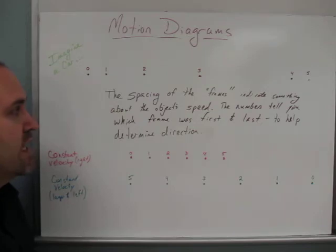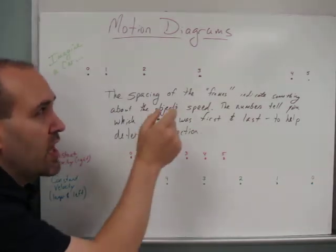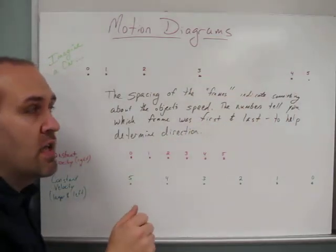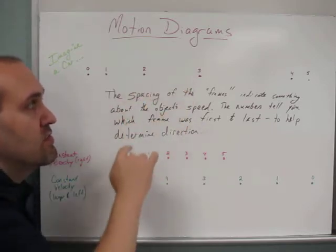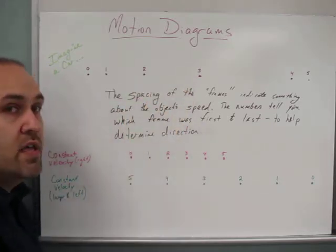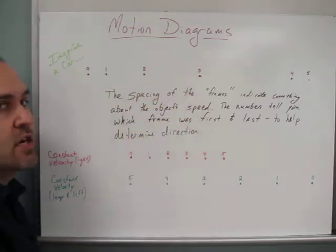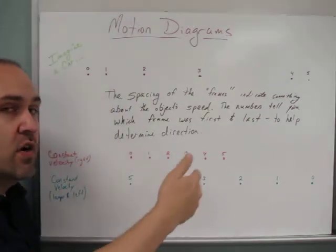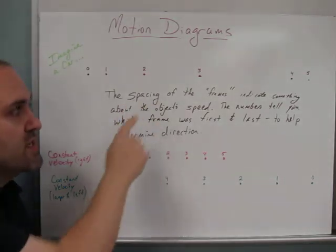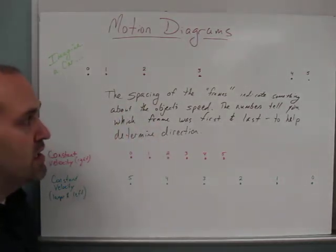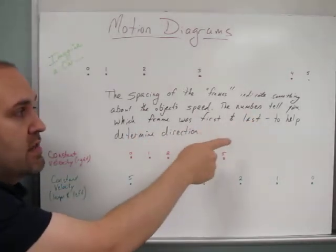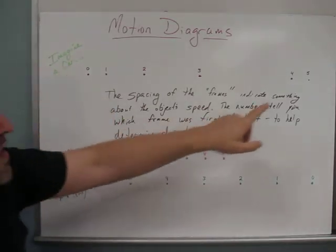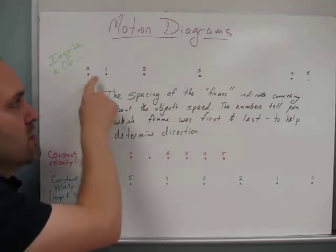The spacing of those frames indicates something about the object's speed. The time between each frame is the same, so the spacing tells you not only where the object is, but how fast it's going. If the frames are spaced very wide, the object is moving quickly. If spaced closer together, it's not moving as fast. The numbers tell you which frame was first and last, helping you determine direction — since frame zero is on the left and frame five is on the right, the object is moving to the right.